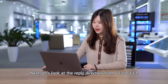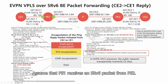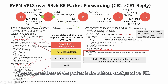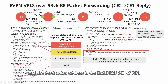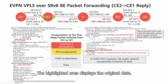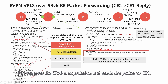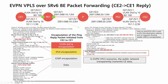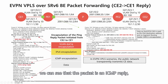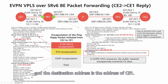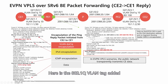Next, let's look at the reply direction from CE2 to CE1. Assume that P1 receives an SRV6 packet from P2. The source address of the packet is the address configured on P2, and the destination address is the End.DT2U SID of P1. The highlighted area displays the original data. After receiving the packet, P1 removes the SRV6 encapsulation and sends the packet to CE1. The packet is an ICMP reply, for which IPv4 encapsulation is performed on CE2. The source address is the address of CE2, the destination address is the address of CE1, and an 802.1Q VLAN tag is added when P1 sends the packet to CE1.